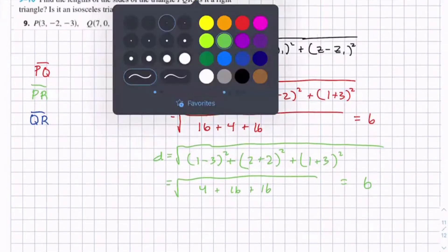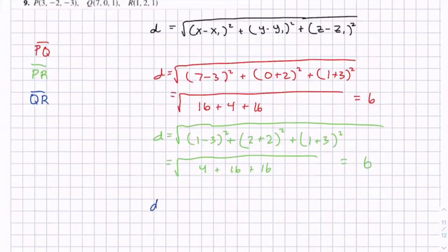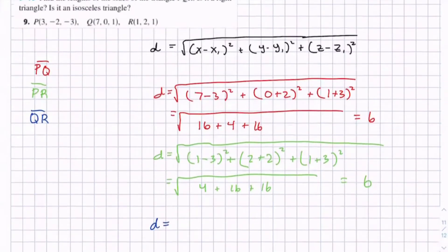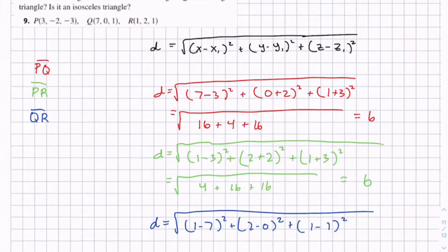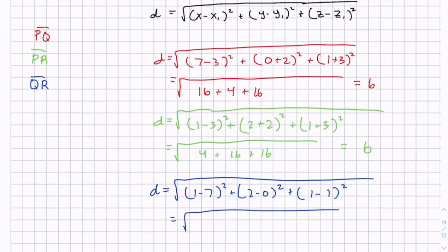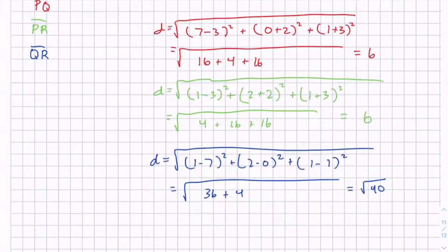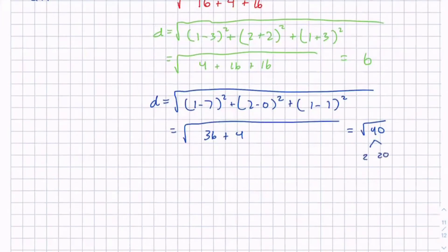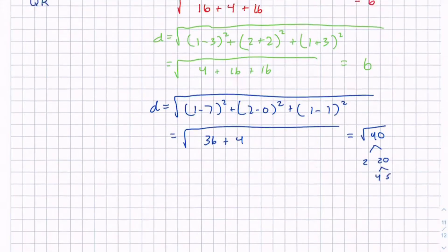We need to find the last side of the triangle, which is QR. d equals (1 - 7)² plus (2 - 0)² plus (1 - 1)². This equals (-6)² which is 36, plus 2² which is 4, which gives us the square root of 40. We can simplify this: √40 = √(4×10) = 2√10.